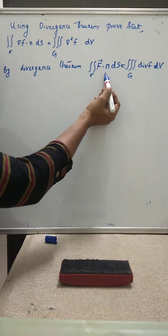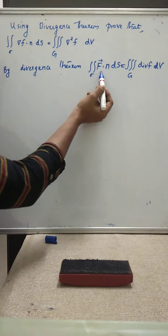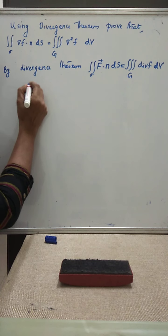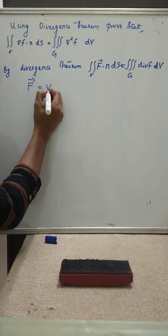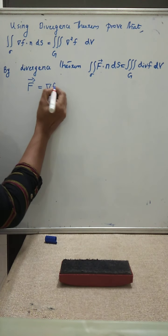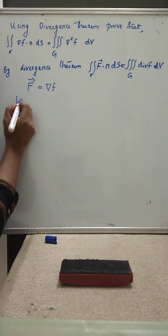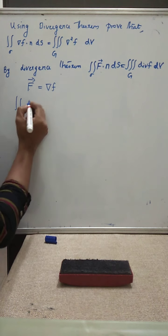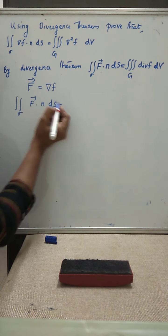Consider the left hand side and compare these two left hand sides. You can see that comparing, we can just put capital F equal to del f. So the left hand side is the double integral over sigma of capital F dot n dS.